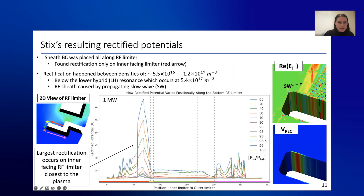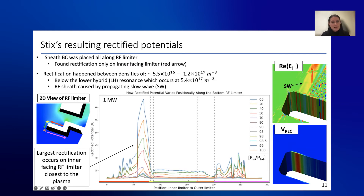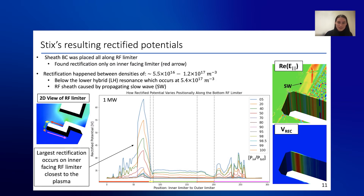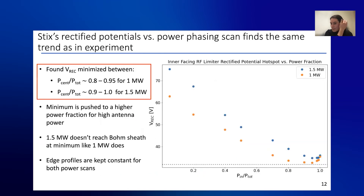I applied those boundary conditions on the RF limiter block and did the power scan. Most of the rectification happens on the inner corner — you can see on the right-hand side how it varies positionally. The peak corresponds to the slow wave directly hitting the wall and rectifying, which is expected. The density prescribes that this wave hits the wall and rectifies, so that's the area I was focused on when doing the scan.